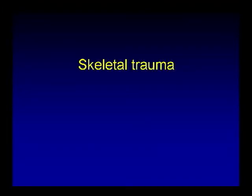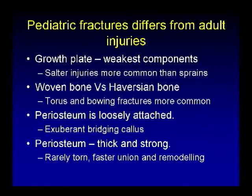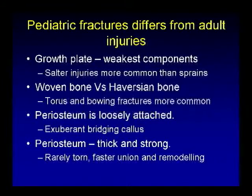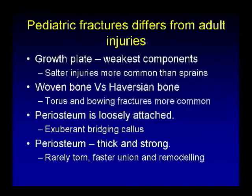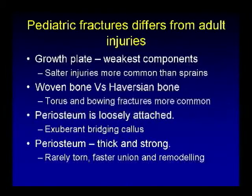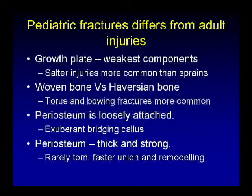A brief overview of skeletal trauma in the pediatric population. Pediatric fractures differ from adult injuries due to pathophysiological differences in the pediatric skeleton. The growth plate is the weakest part; mechanisms causing sprains in adults cause growth plate injury in children. The pediatric skeleton has a higher percentage of woven bone, so injuries that would cause displaced fractures in adults lead to torus and bowing fractures in children. The periosteum is loosely attached, resulting in exuberant bridging callus in healing, though it is very thick and strong and rarely torn, making remodeling and union faster and more complete.